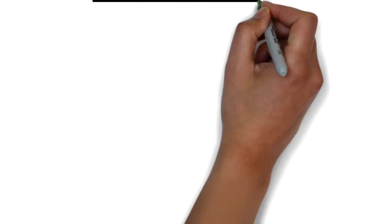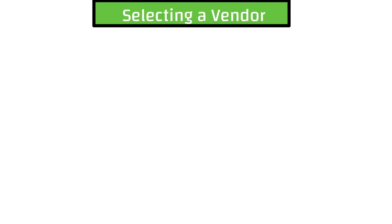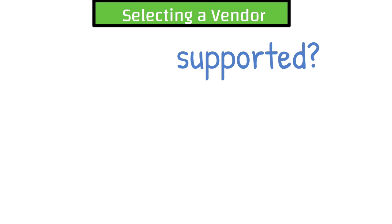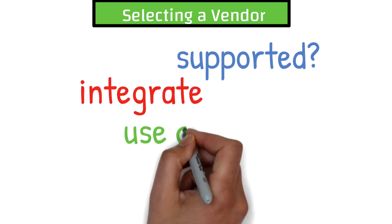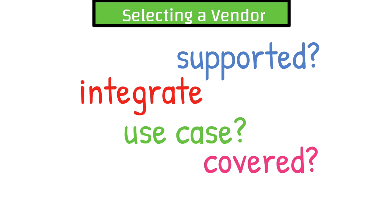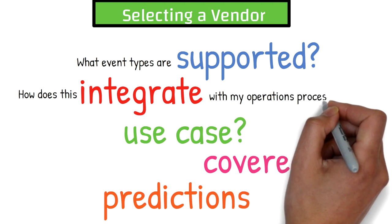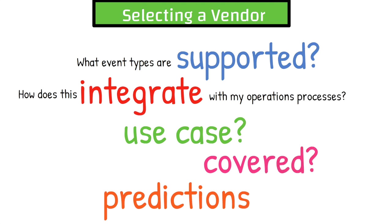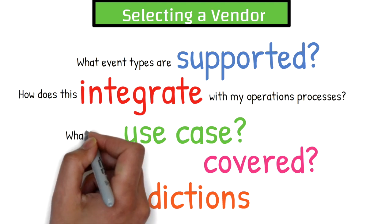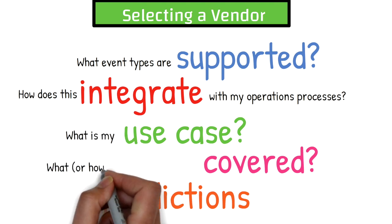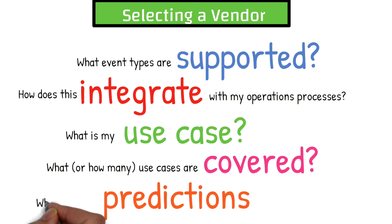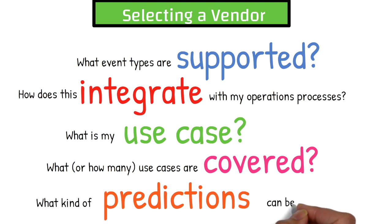The AIOps market is still incredibly new, and most organizations are just now beginning to scratch the surface of what's possible with artificial intelligence. Over time, we should expect to see more use cases covered as vendors introduce new training into their machine learning models. As you consider the landscape of potential solutions, here are some questions to consider: Does this solution ingest data from all of my major IT assets, and what event types are supported? How well does this solution integrate with my current processes — can it speed up my triaging steps? What is my use case, what use cases are covered by the solution's machine learning training, and what kind of proactive predictions can be expected?